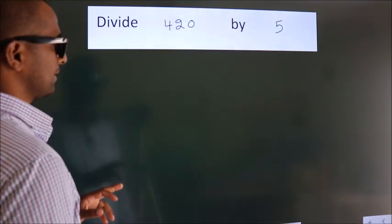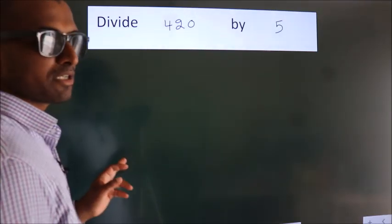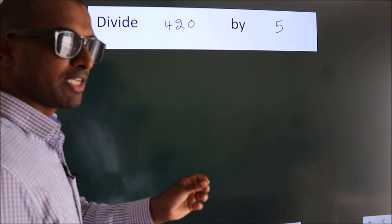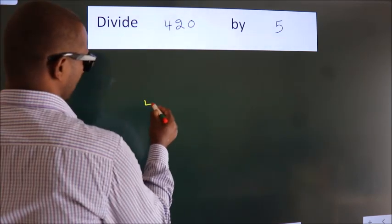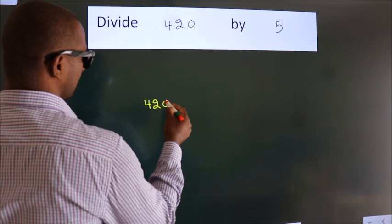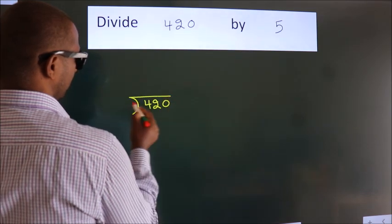Divide 420 by 5. To do this division, we should frame it in this way: 420 here, 5 here.